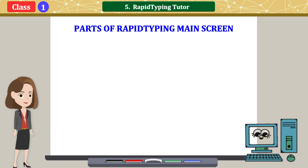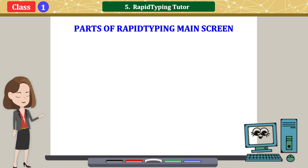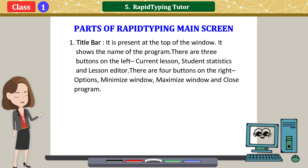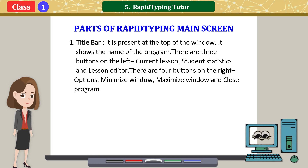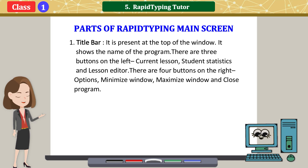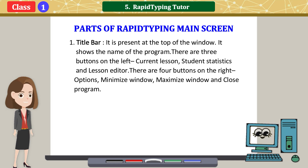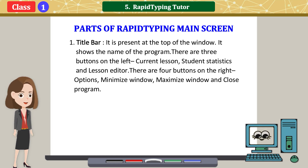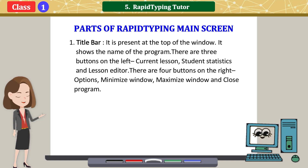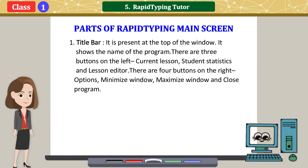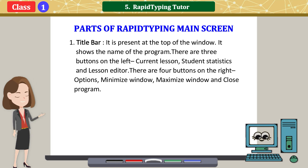Parts of Rapid Typing Main Screen. 1. Title bar: It is present at the top of the window and shows the name of the program. There are three buttons on the left — Current Lesson, Student Statistics, and Lesson Editor. There are four buttons on the right — Options, Minimize Window, Maximize Window, and Close Program.